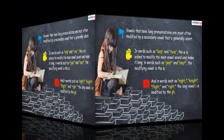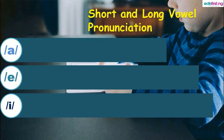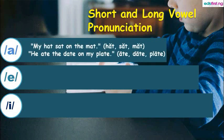Now let's have a look at several sentences where the short and long vowel pronunciations have been used. For the A sound, we have: my hat sat on the mat. Hat, sat, and mat all have the short vowel pronunciation.